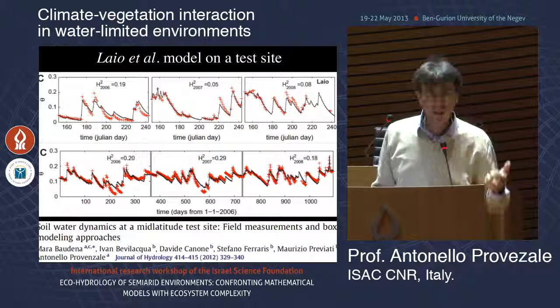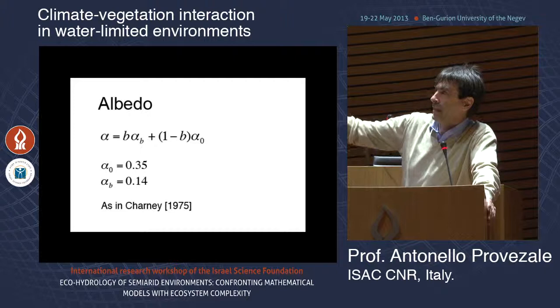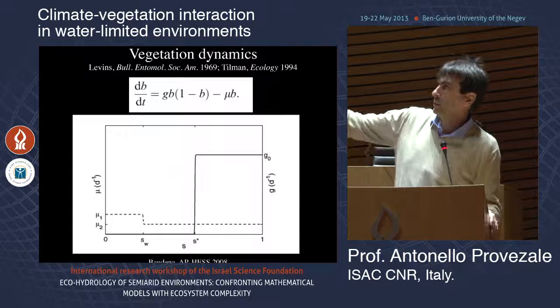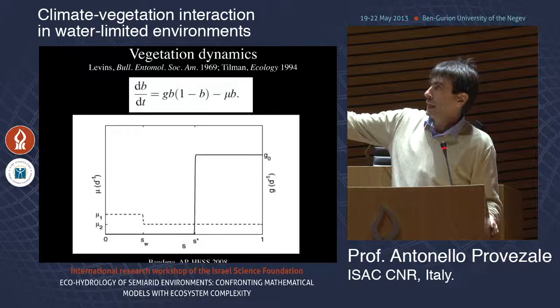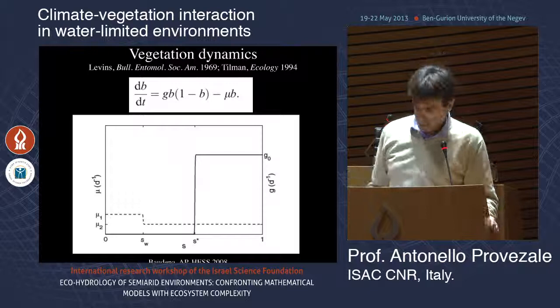There are worse assumptions in the model than the evapotranspiration. The albedo comes from vegetated soil and bare soil. Vegetation dynamics uses the Levins-Tilman approach for vegetation cover: colonization rate is assumed to be a function of soil moisture — zero up to stomata fully open, and some value above — and mortality is larger below the wilting point and slightly smaller above it.